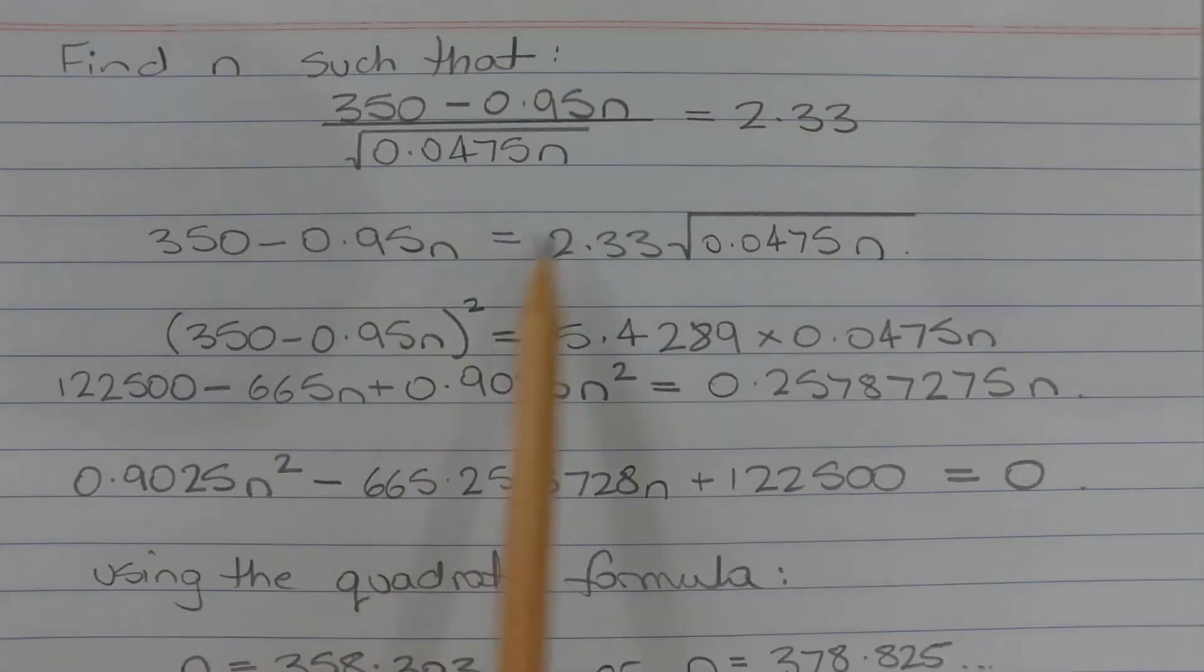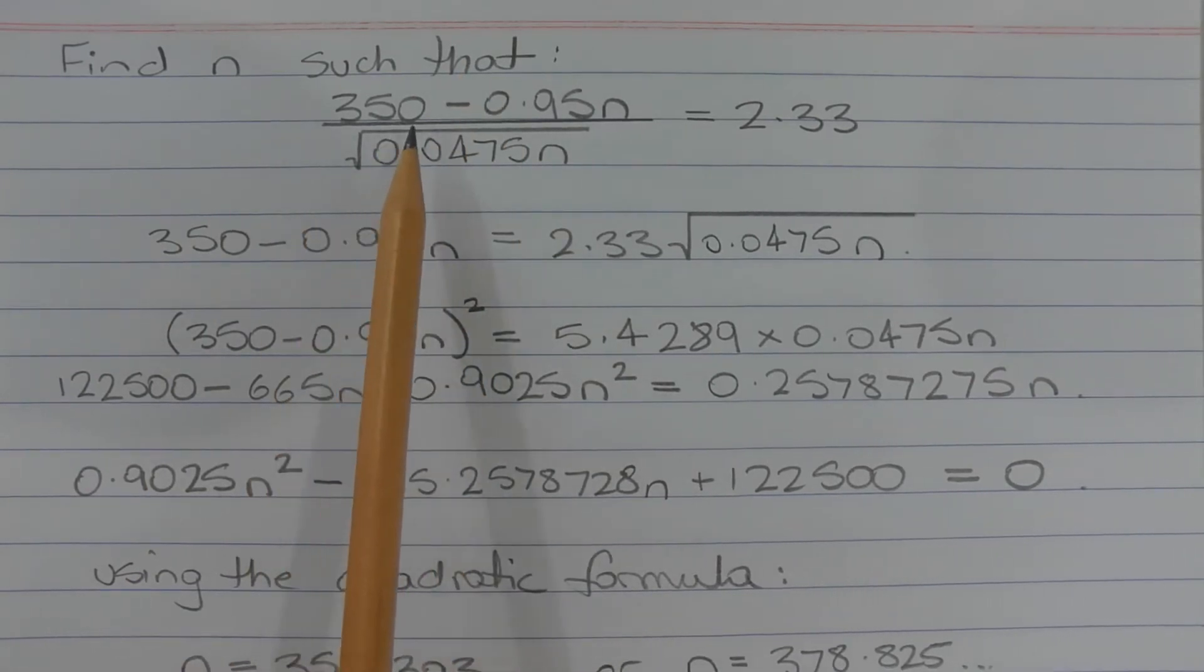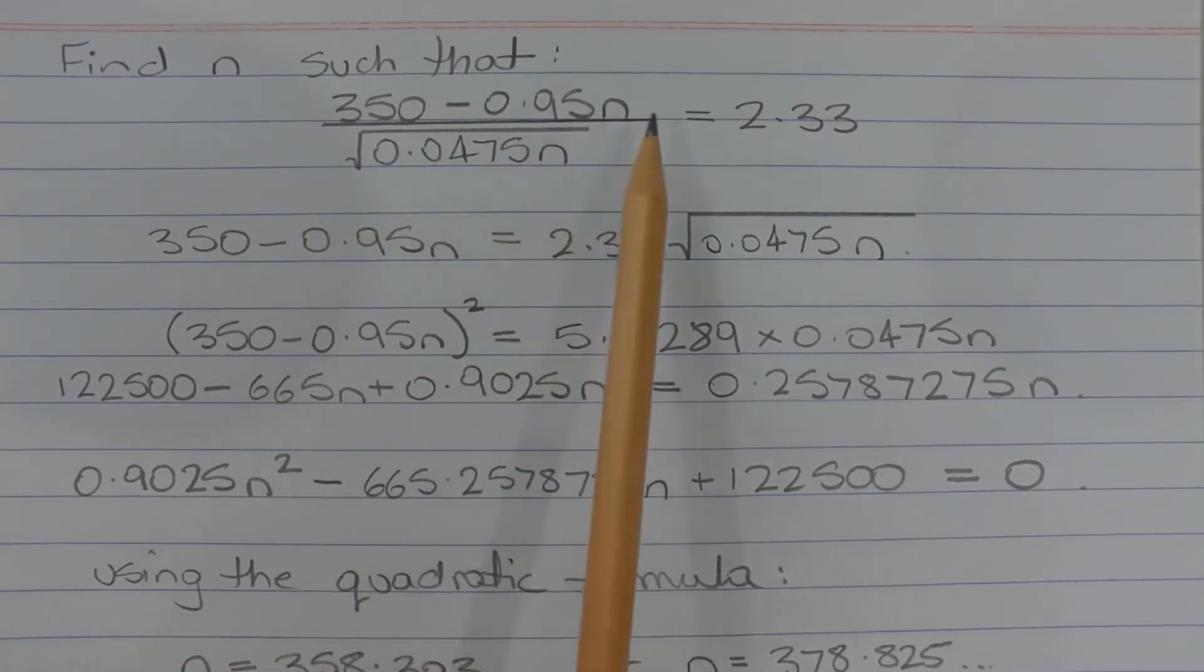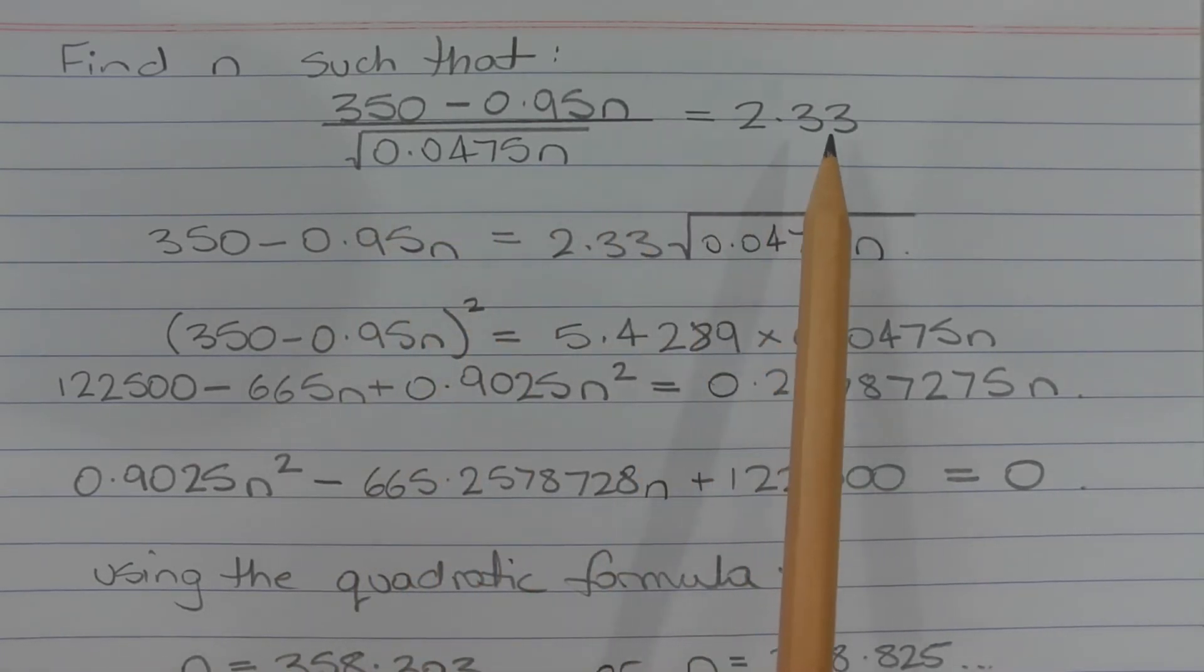Using the Z-score formula, we need to find the value of N such that (350 minus 0.95N) over the square root of 0.0475N is equal to 2.33.